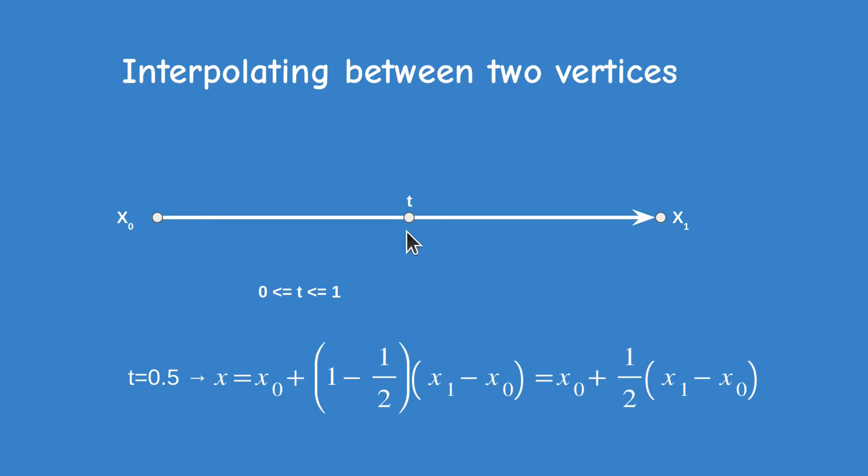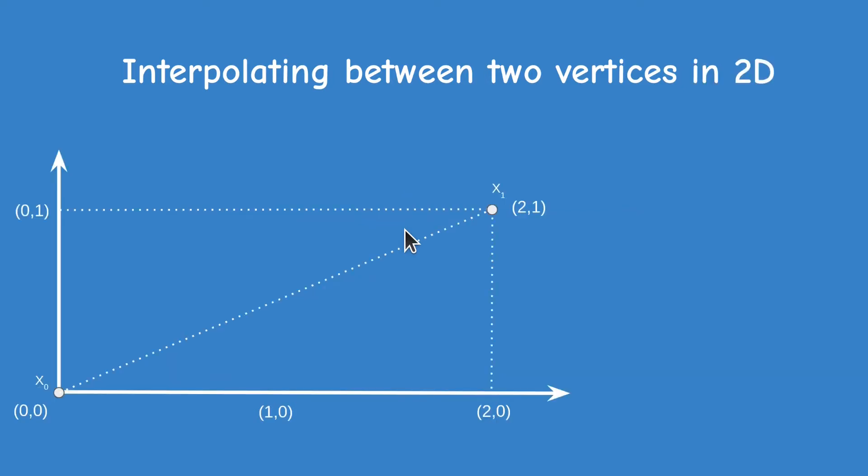We can see that this formula works in the same way even when our starting and ending points have more than one value to be interpolated. For example in the following diagram, these points are located on a 2D grid so we have both an x and y components in each point. If our starting point is at 0 by 0 and the ending point is at 2 by 1 and t is exactly half, we interpolate x and y separately and the interpolated point is at 1 by half.